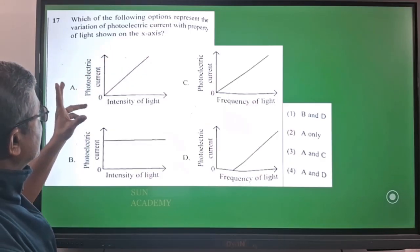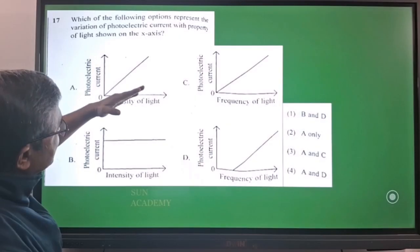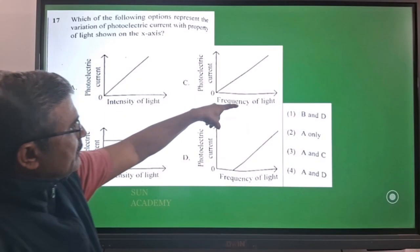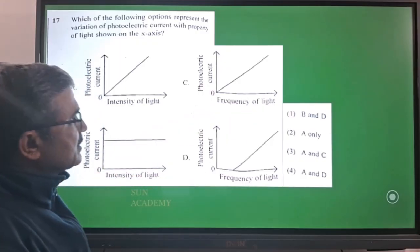So you need to compare photoelectric current with the quantity that is given on the x-axis. Here intensity of light is given, and frequency of light is given.